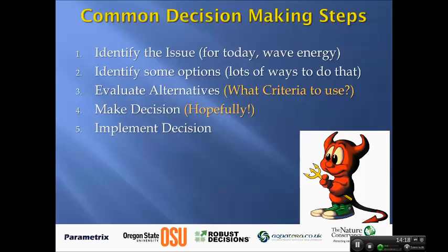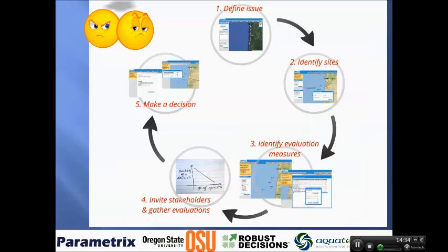Common decision-making steps: identify the issue - wave energy; identify some options; evaluate alternatives with some criteria; make a decision; and implement the decision. More specifically, we're going to define an issue, identify sites relevant to it, identify ways to evaluate those sites, invite stakeholders and gather their evaluations, then fuse stakeholder and science data together analytically to produce an outcome that uses both.